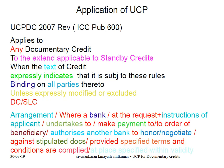The Application of UCP: The UCPDC is published in the year 2007 and it is called Publication No. 600. It applies to any documentary credit, and to the extent applicable, to standby credits also, when the text of the credit expressly indicates that it is subject to these rules. It is binding on all parties unless expressly modified or excluded. UCP applies to any credit — and to standby when the text expressly indicates it is subject to ICC Publication No. 600, UCPDC — and is binding on all parties unless expressly modified or excluded.